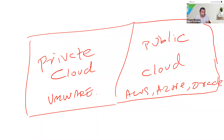That is why public cloud adoption was slow initially — people worried about security. Running applications in someone else's data center in a different country raised concerns about data security. But strategically, all service providers like AWS, Google set up their own data centers in each country. Singapore has data centers for AWS, Azure, and Google. There is one coming up in Indonesia.